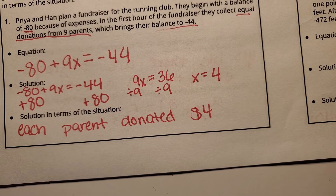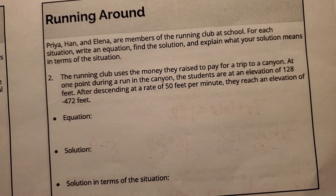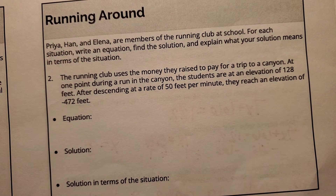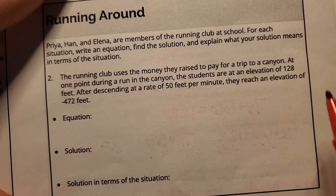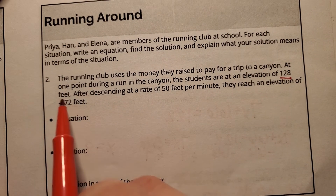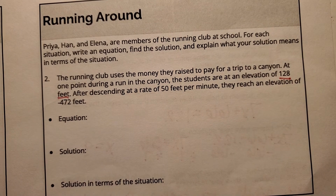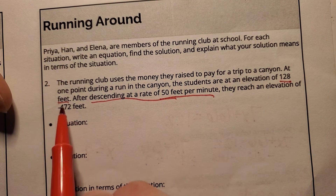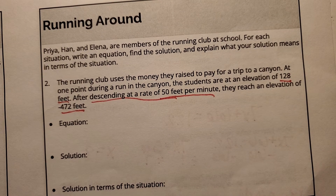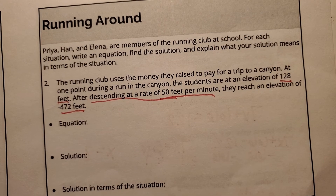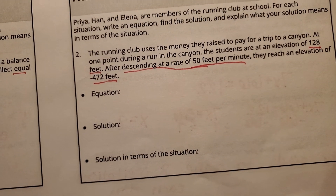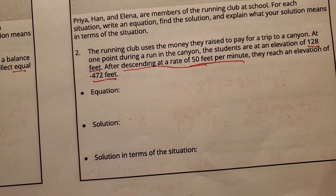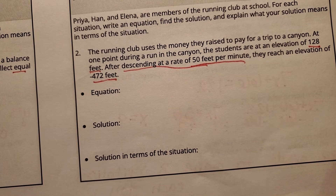Let's finish the lesson with our last running-around situation. The running club uses the money they raised to pay for a trip to a canyon. At one point, the students are at an elevation of positive 128 feet. After descending at a rate of 50 feet per minute, they reach a final elevation of negative 472 feet. Write an equation, find the solution, and explain what your solution means in terms of the situation. Pause here and come back once you're ready.